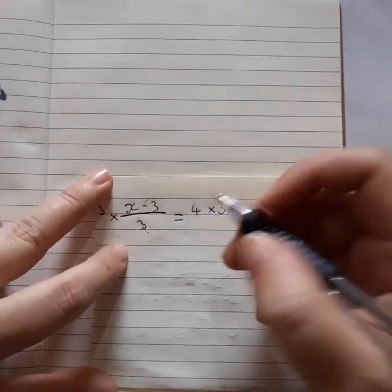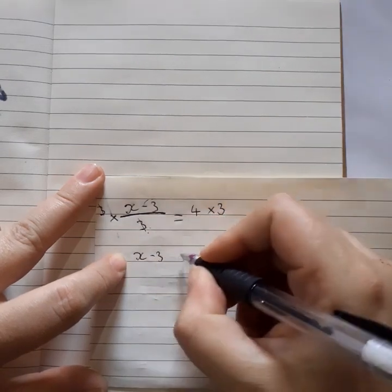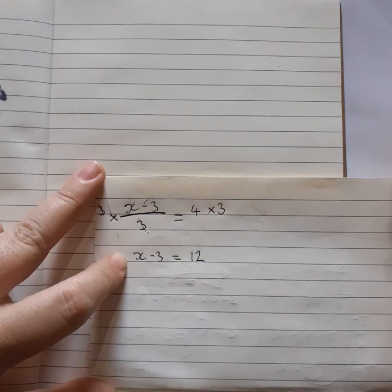Okay, so what have we got left? Here we've got left x minus 3. Here we've got left 12.